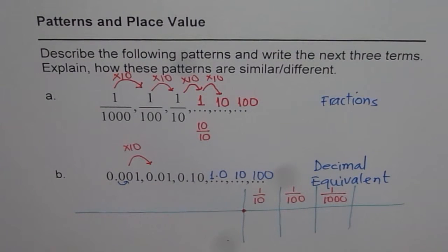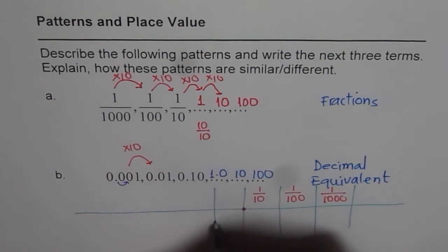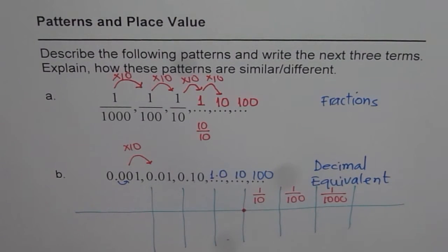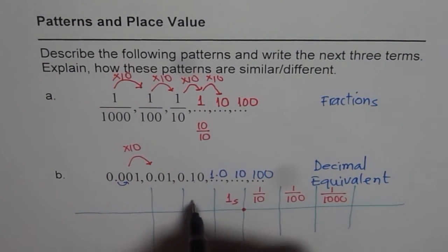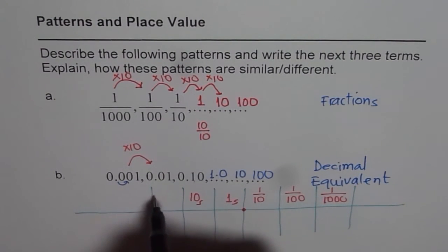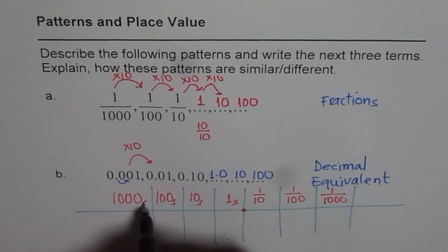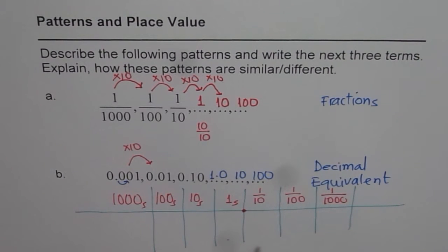And on the left side of this decimal, we have 1s, 10s, 100s, and 1000s. So on the left side, we have 1s, 10s, 100s, and 1000s, and so on. So that is our place value chart. And this pattern kind of gives us a look and understanding of place value chart. I hope that helps. Thank you.